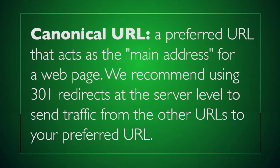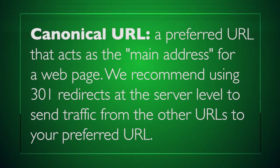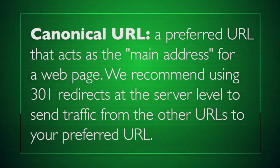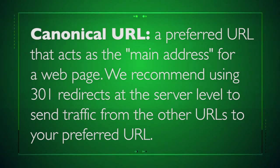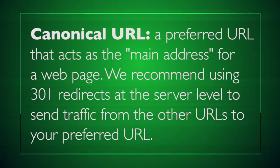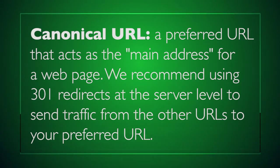A canonical URL is a preferred URL. Google says it's a good idea to pick one of those URLs as your preferred destination and use 301 redirects to send traffic from the other URLs to your preferred URL. A server-side 301 redirect is the best way to ensure that users and search engines are redirected to the correct page.